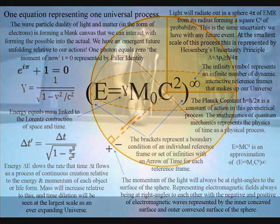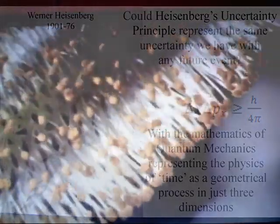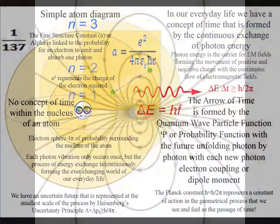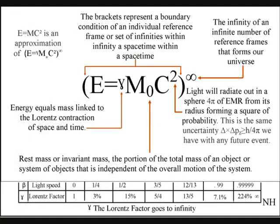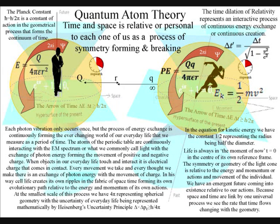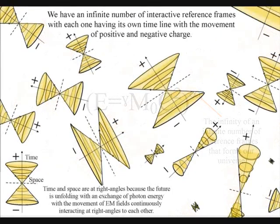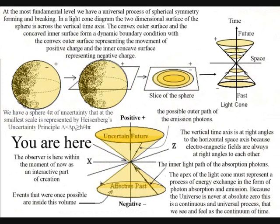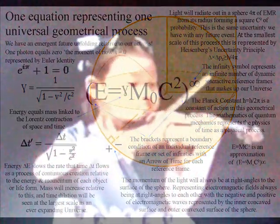This simple geometrical process forms the probability and uncertainty of everyday life, and at the smallest scale of the process is represented mathematically by Heisenberg's uncertainty principle. In such a theory we have an emergent future unfolding photon by photon with the movement of charge and flow of electromagnetic fields. The brackets in the equation represent a dynamic boundary condition of an individual reference frame with an arrow of time or timeline for each frame of reference. The infinity symbol represents an infinite number of dynamic interactive reference frames that are continuously coming in and out of existence. As a universal process of energy exchange, each individual is in the center of their own reference frame with a probabilistic uncertain future unfolding relative to their actions. In such a theory creation is in the hand and eye of the beholder.